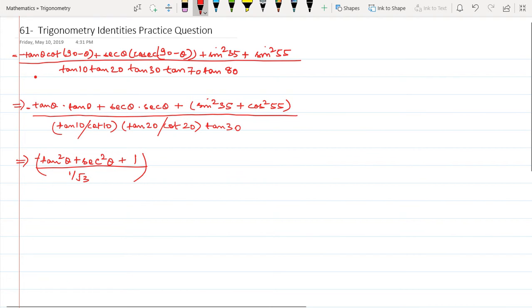Here I have 1 minus tan squared theta. Sorry, here I have sec squared theta minus tan squared theta, which is equal to 1. So I get 1 plus 1 divided by 1 upon root 3. So the answer is going to be 2 root 3.